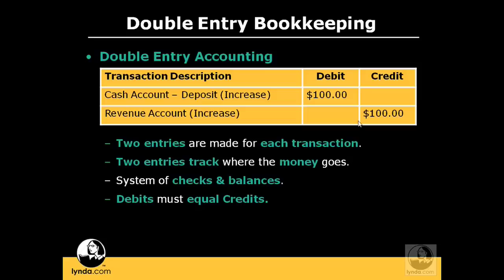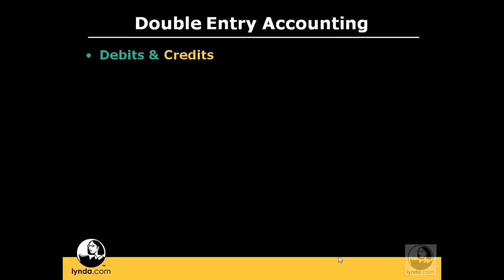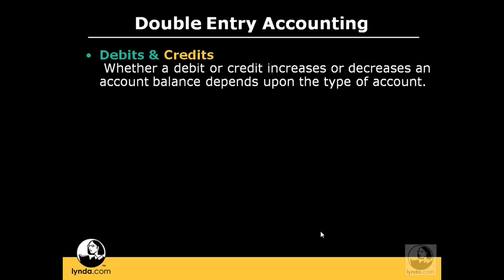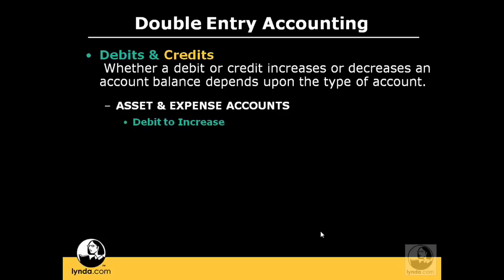As you can see in the example, we've increased our cash account by debiting it, and we've also increased our revenue account by crediting it. I'm sure you're wondering how do you know when to debit and credit something, and how you know whether that increases or decreases it. Debits and credits increase or decrease account balances based on the type of account. For expense accounts, you debit to increase them and you credit to decrease them.